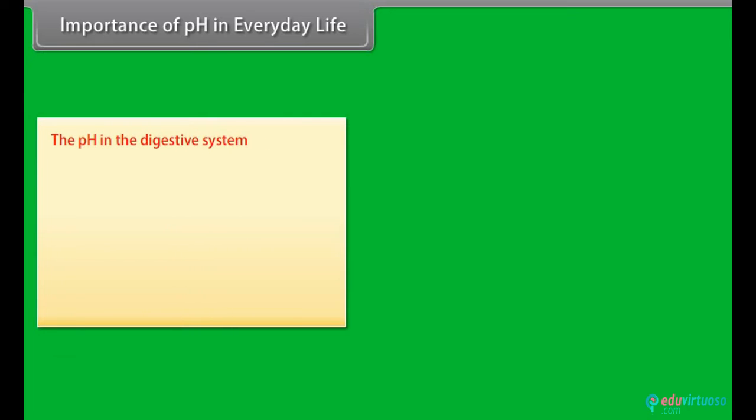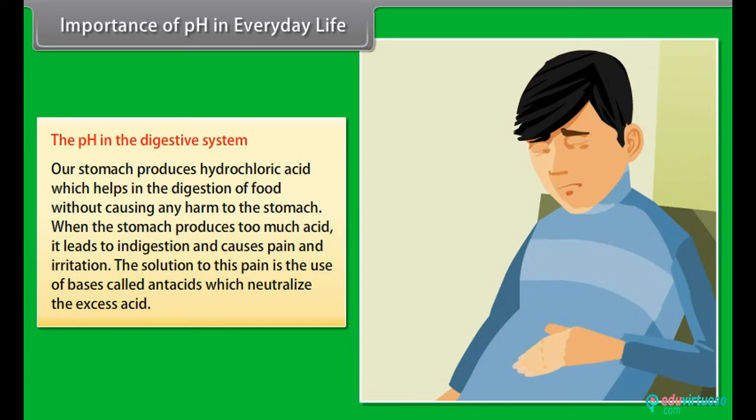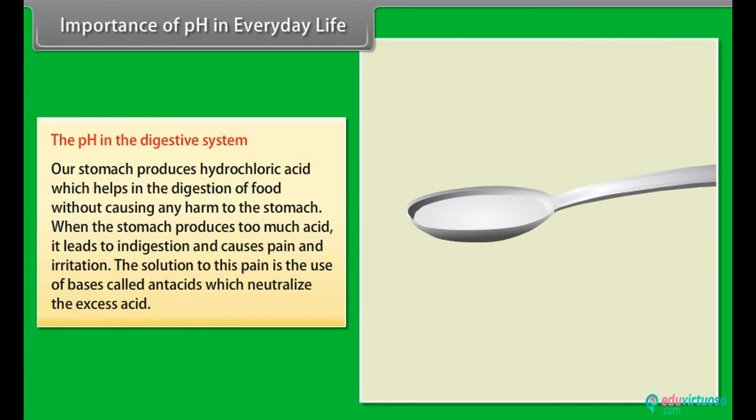The pH in the digestive system. Our stomach produces hydrochloric acid which helps in the digestion of food without causing any harm to the stomach. When the stomach produces too much acid, it leads to indigestion and causes pain and irritation. The solution to this pain is the use of bases called antacids which neutralize the excess acid.